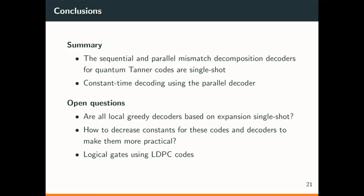Thanks for a great talk, Bailey. Any questions? For the expander code small-set-flip decoder, previous work has shown a single-shot decoder. Why doesn't that proof straightforwardly generalize to good LDPC codes? So we actually use many of the same ingredients. The decoder is not exactly the same — it uses this mismatch function instead of the syndrome, so there's some work needed to adapt those similar ingredients for the mismatch function instead.